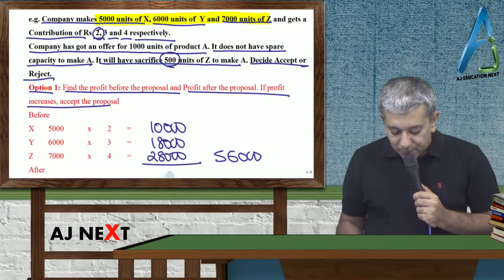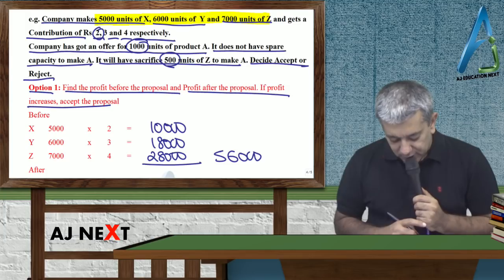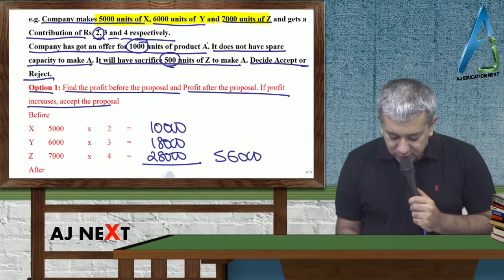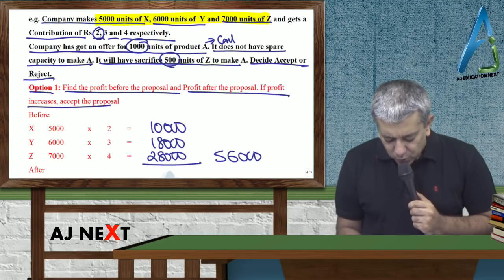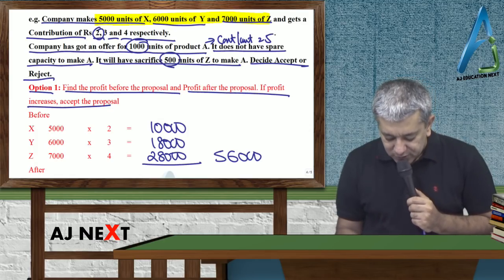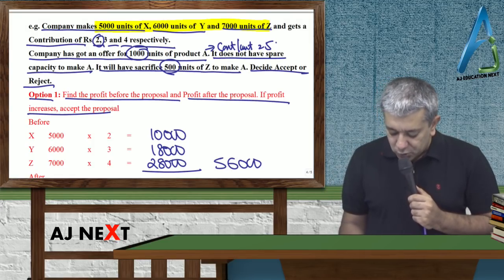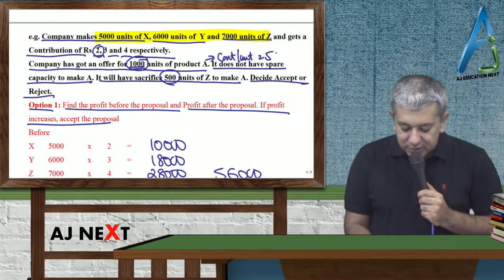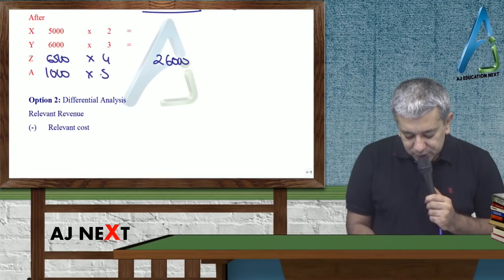Abhi agar proposal accept kar lega, toh dekho, X or Y ko toh koji farak nae paad tha. Lekin Z ka, kitna unit sacrifice karna padega? 500. Toh 7,000 units banata tha, abhi kitna banega? 6,500 into 4. Kitna a jaata hai? 26,000. Aur ye karne ke baad, aap log A accept kar loge. Toh A ka, kitna units ka offer tha? 1000. Let's assume contribution per unit joh hai, aapko 5 rupees ka milega.